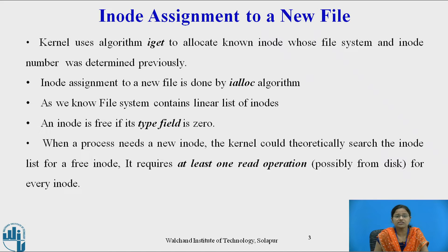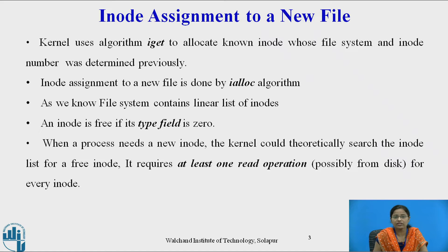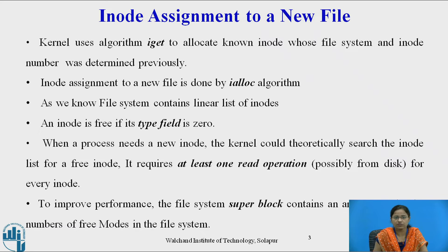Whenever a process needs a new iNode, the kernel searches the free iNode list. This may require at least one read operation from the disk for every iNode. So searching for a free iNode for a newly created file requires I/O operations, which may degrade the performance of the system. To address this, the file system super block contains an array of free iNodes in the file system.